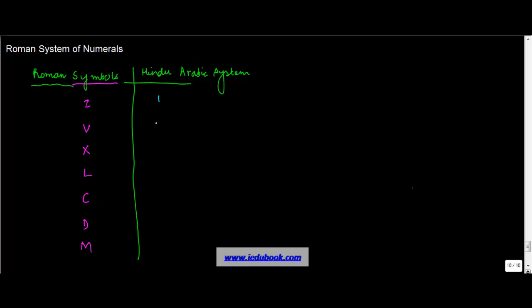V represents 5, X represents 10, L represents 50, C represents 100, D represents 500, and M represents 1000.